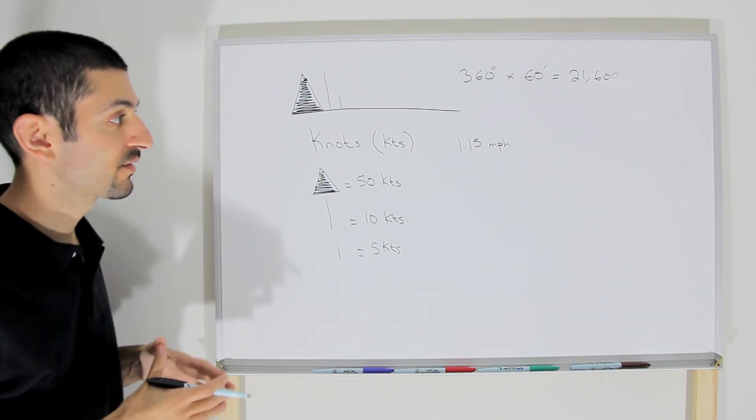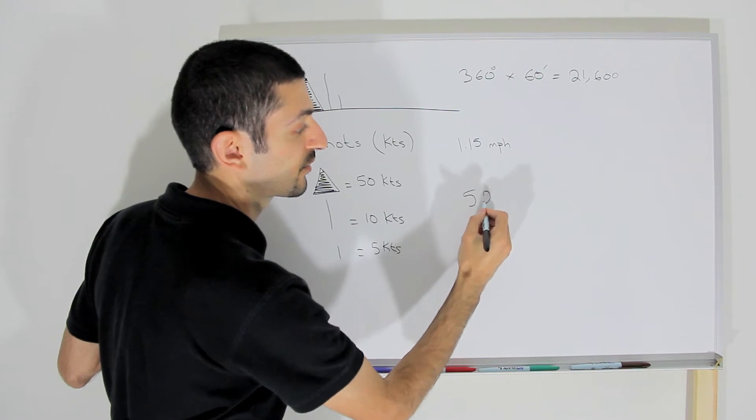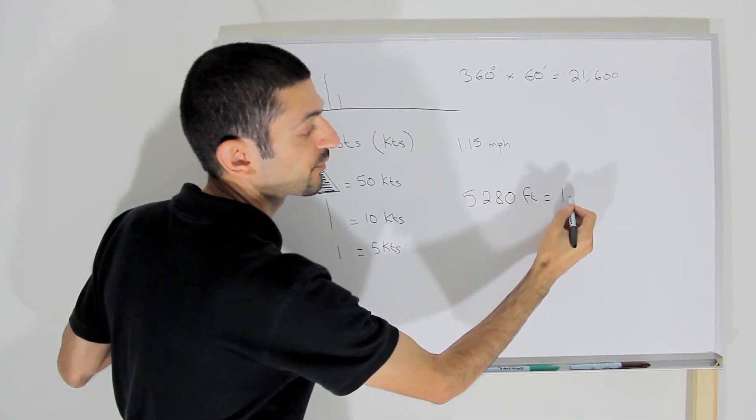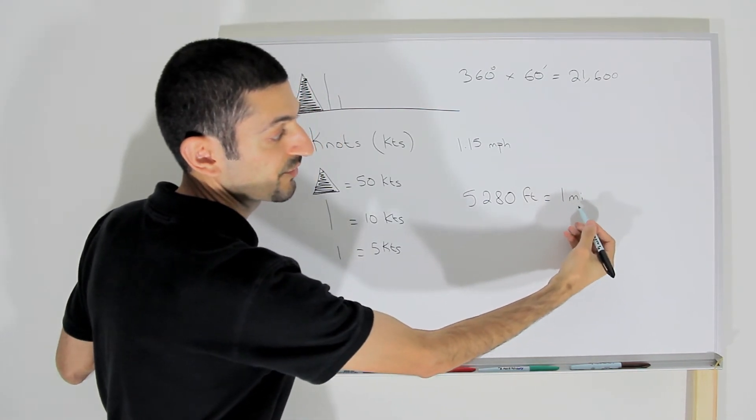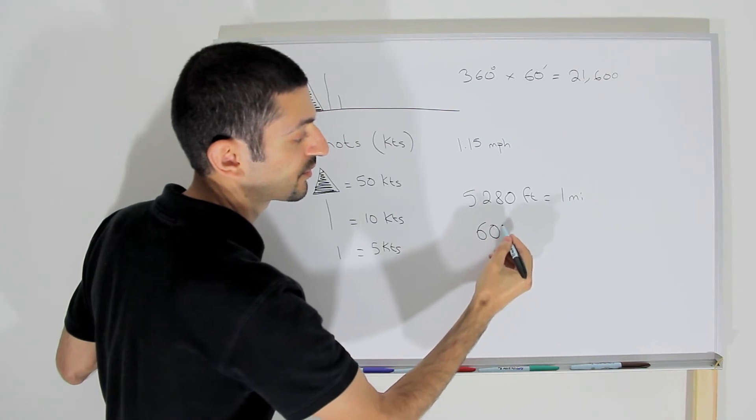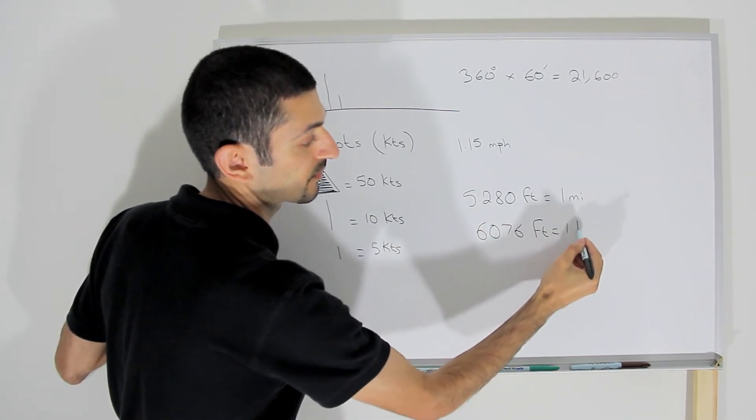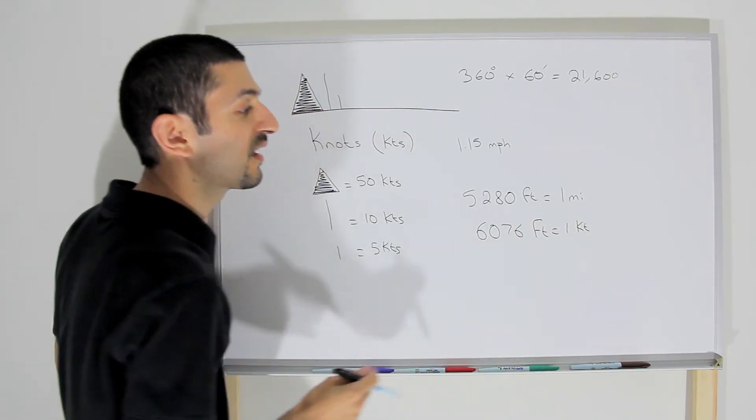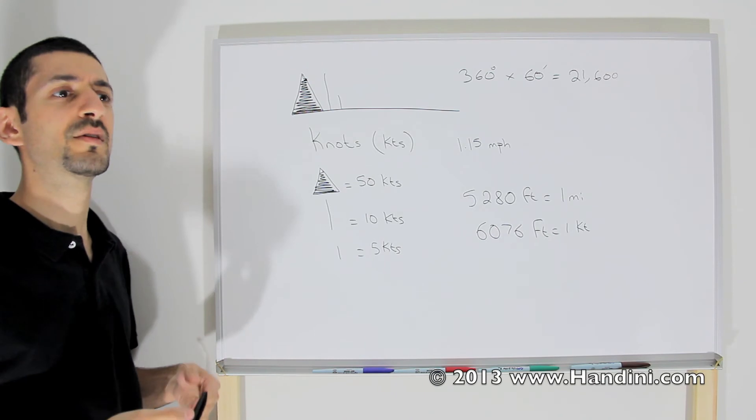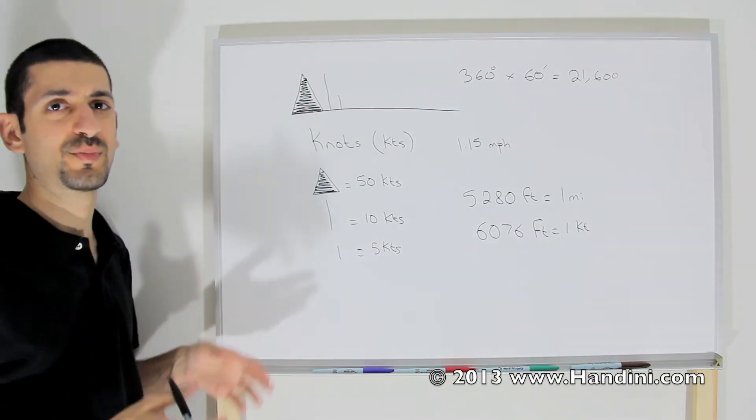Now as we know that 5,280 feet equals one regular mile, one regular mile which is abbreviated MI, one nautical mile is 6,076 feet. And in reality we need to just switch to the metric system where a thousand meters equals one kilometer. I mean that would make life so much better.